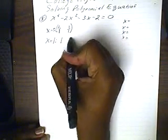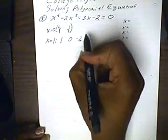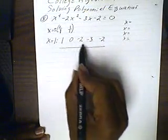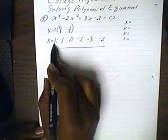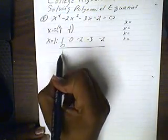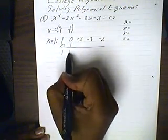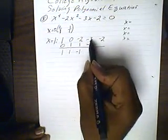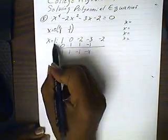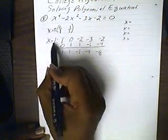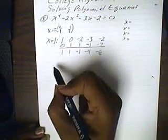We'll take the coefficients from the polynomial: one for x to the fourth, zero for x to the third, negative two for x to the second, negative three for x, and then the constant two. Everything above the line adds to the top line; everything below multiplies with one. We start off with zero. One added to zero is one; one times one is one. Zero added to one is one; one times one is one. Negative two added to one is negative one; negative one times one is negative one. Negative three added to negative one is negative four. Since the remainder did not come out to be zero, this is not a solution of this polynomial.